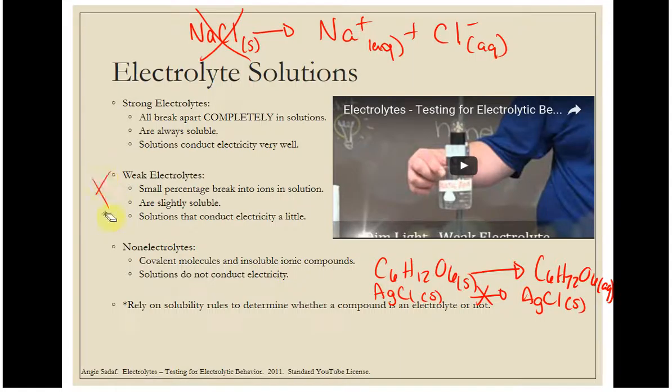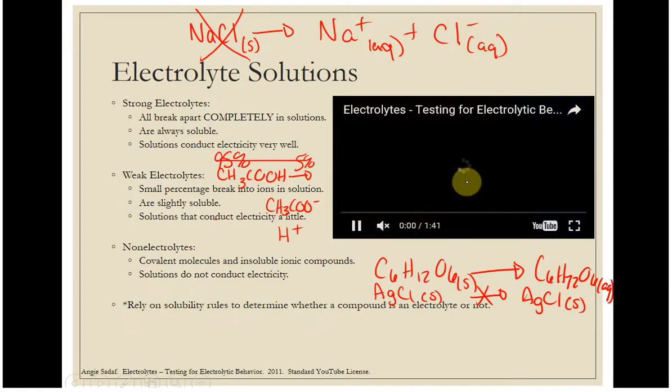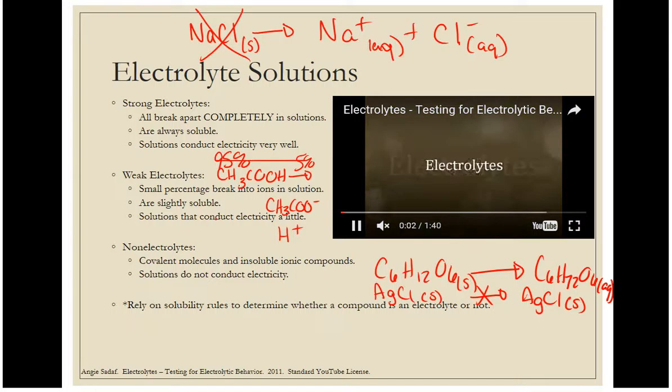Weak electrolytes are the things that occasionally break apart. Something like acetic acid - this is in vinegar - about 5% of these will break apart to give you the acetate ion and an H+ ion, but only 5%. The other 95% are stuck in the molecular form. Here you have some ions present, so it will conduct electricity but not very well. What that really does for us is it's going to give us a way of talking about the likelihood a substance is going to have as to whether it's going to break apart or not.